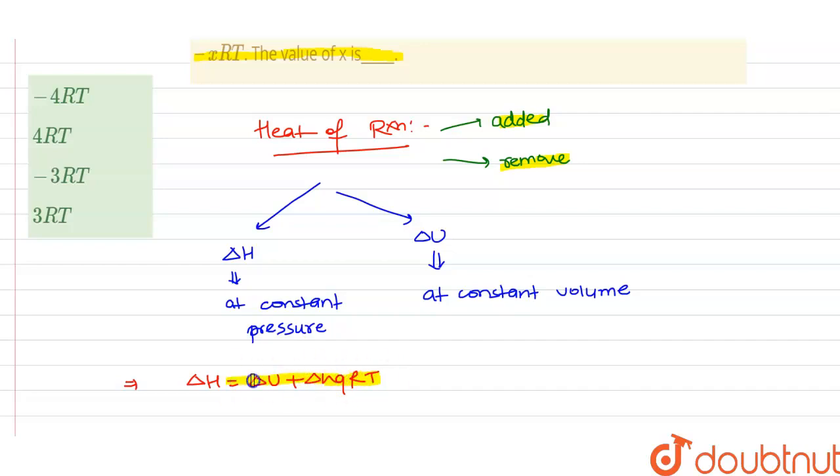Delta ng is defined as the difference between the number of moles of product and the number of moles of reactant. An important point to be remembered is that both the reactant and the product phase must be in gaseous form.